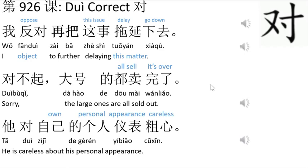对不起，大号的都卖完了 — Sorry, the large size is sold out. 对不起 means sorry. 大号 means large. 的 means are. 都卖完了 means sold out.